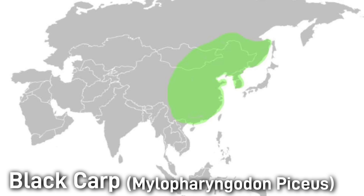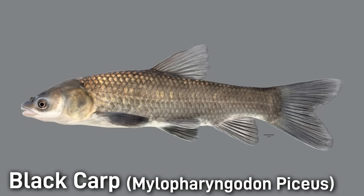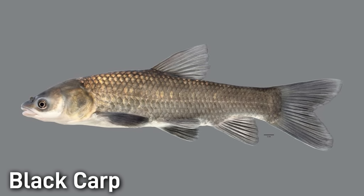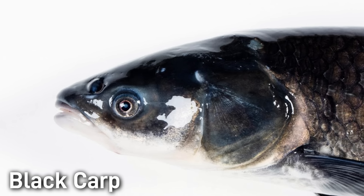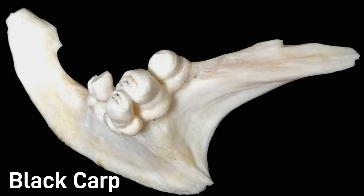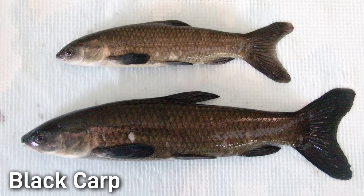Black carp, also native to East Asia, are mollusk specialists. They were first brought to the U.S. in the 1970s, accidentally included with shipments of grass carp, and later were intentionally stocked into aquaculture ponds to control snails that carry parasites. However, floods and escapes released them into rivers, particularly the Mississippi system. Black carp resemble grass carp but are darker with a pointed snout, and can grow a massive 5 feet long. Their defining feature is molar-like teeth used to crush the shells of snails and mussels. Their diet makes them especially concerning in North America, which is home to many threatened native mussels and snails. Even a small population could devastate mussel beds and restructure bottom-dwelling communities. Because mussels filter water and support many other species, their loss would have far-reaching effects.